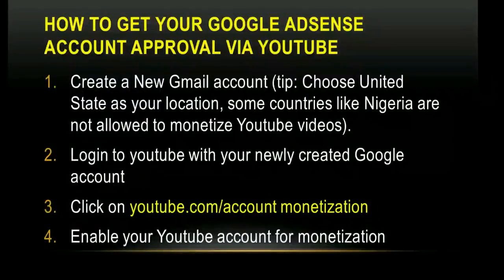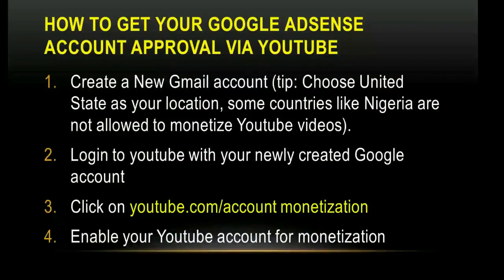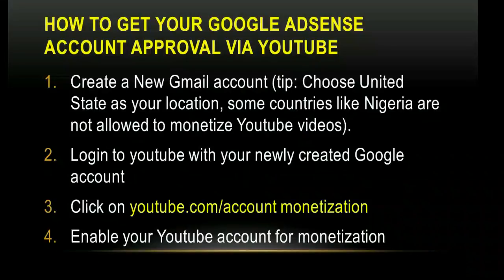Now, what do you need to do to get your YouTube Google AdSense approved? The first thing is to create a new Gmail account. I advise you to choose United States or United Kingdom as your location, because of certain regional considerations with how Google operates. Then log in to YouTube with your newly created Google account, and locate the monetization section on your YouTube channel.